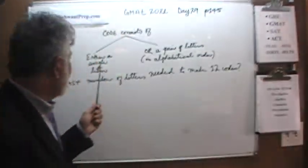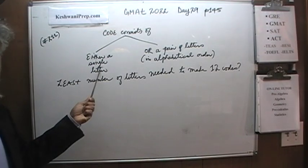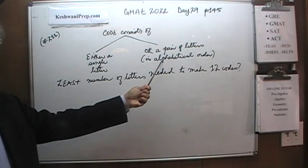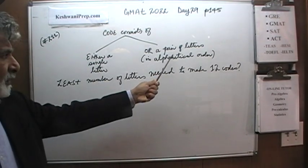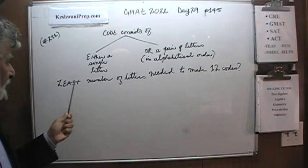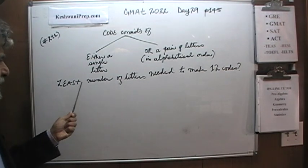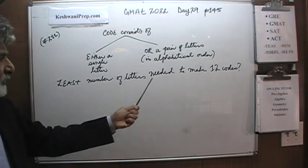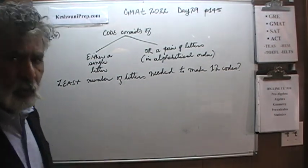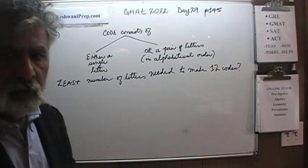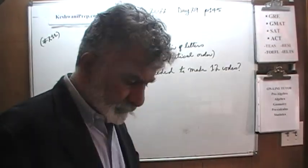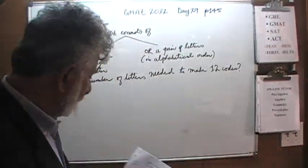The codes will consist of either a single letter or a pair of letters. If it is a pair of letters, it has to be in alphabetical order. The question simply is: what is the least number of letters needed to come up with 12 codes to identify 12 different people?